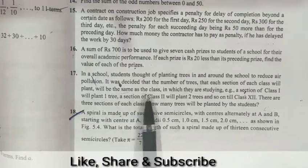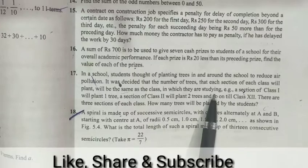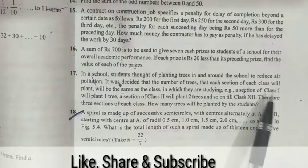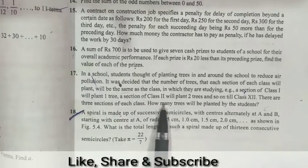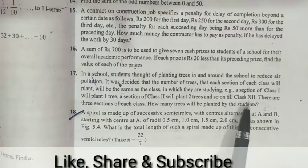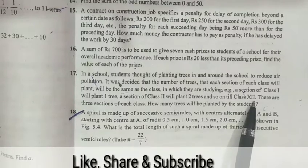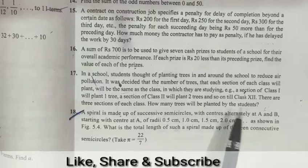For example, section A of Class 1 will plant one tree, section of Class 2 will plant two trees, and so on, till Class 12. There are three sections of each class. How many trees will be planted by the students?